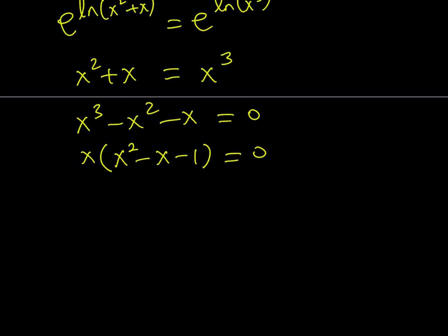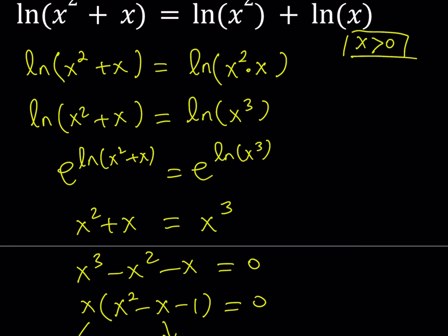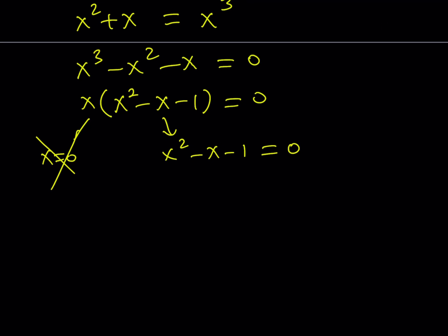From here we get two things. x is either 0 or this expression here is 0. Okay. But that expression has a golden flavor. However, x equals 0 is not allowed because x must be greater than 0. So we're going to reject that. And we're going to try to solve this quadratic.